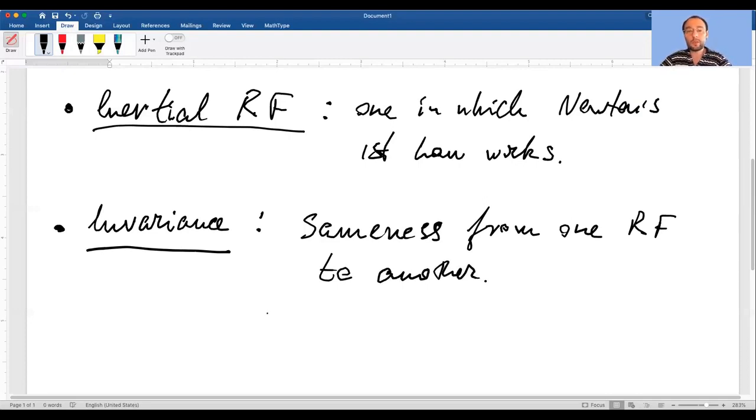One important point to make is that not only can you have invariant quantities like the time to fall to the ground or the mass, but you can also have invariant laws. A law of physics is a statement about a relationship between quantities. F equals ma relates force and acceleration. V equals IR relates potential and resistance. F equals ks relates force and displacement. Laws of physics are relationships.